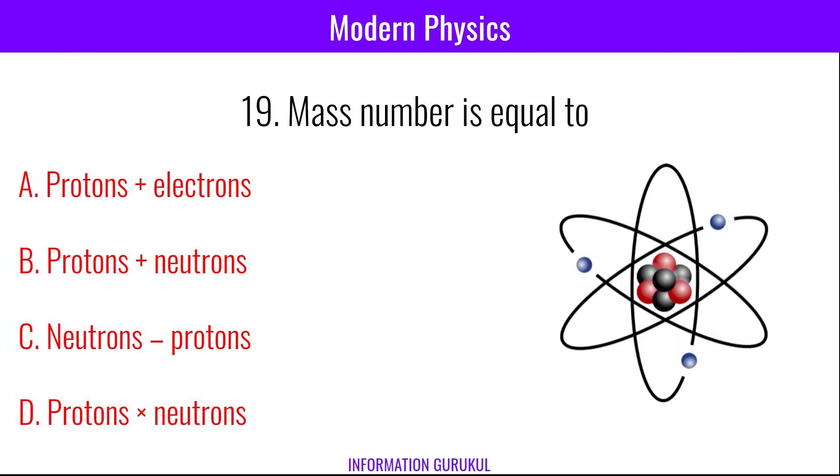Mass number is equal to protons plus neutrons.